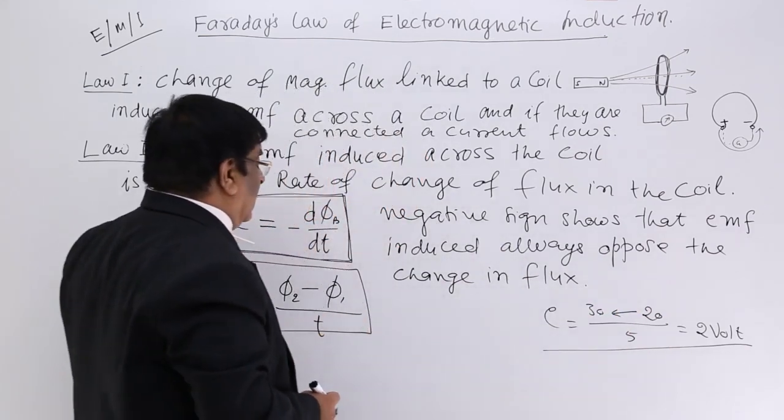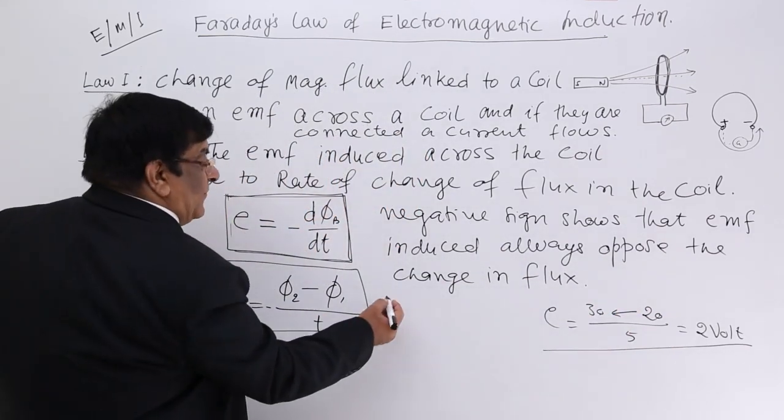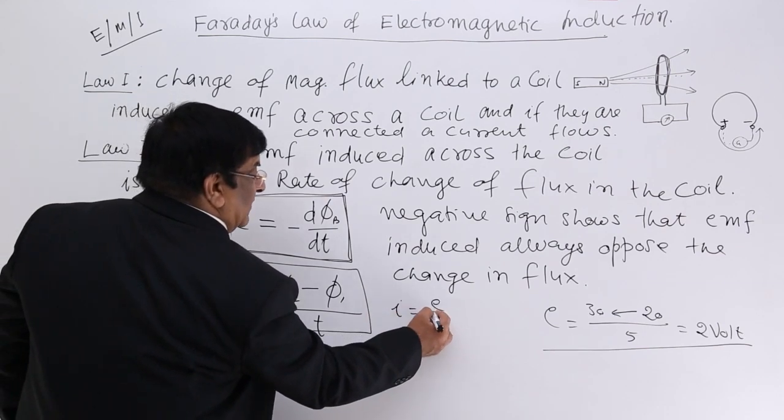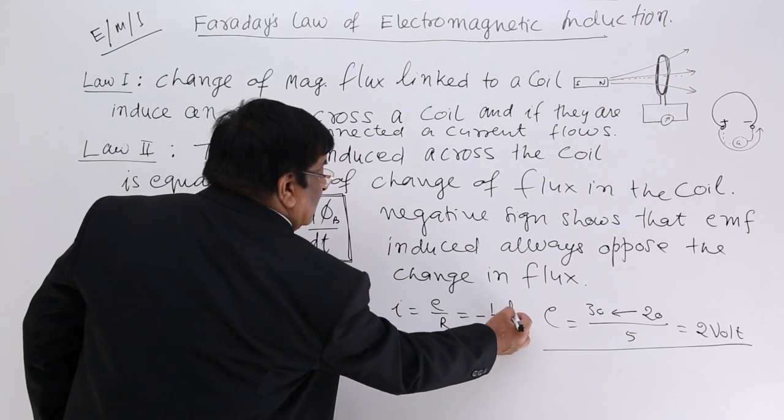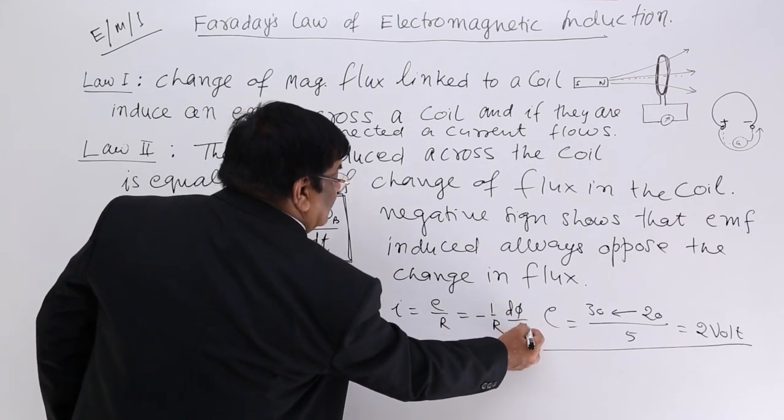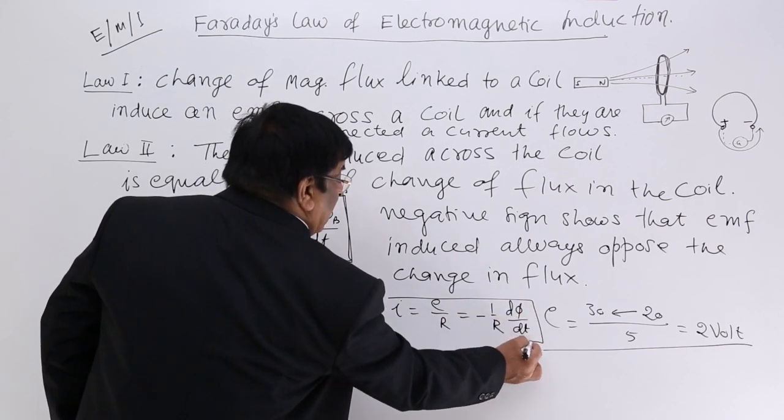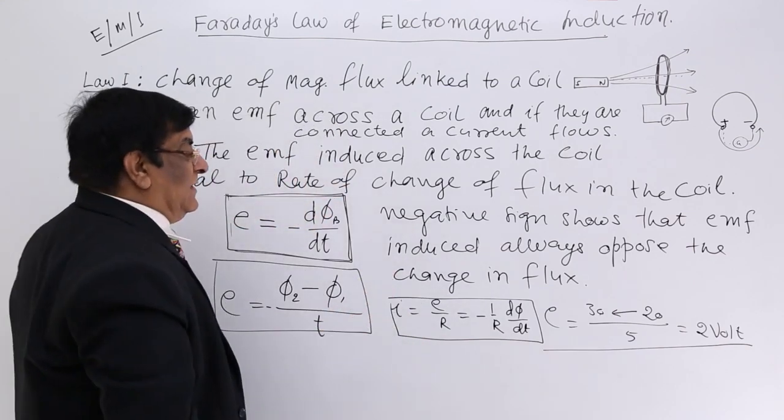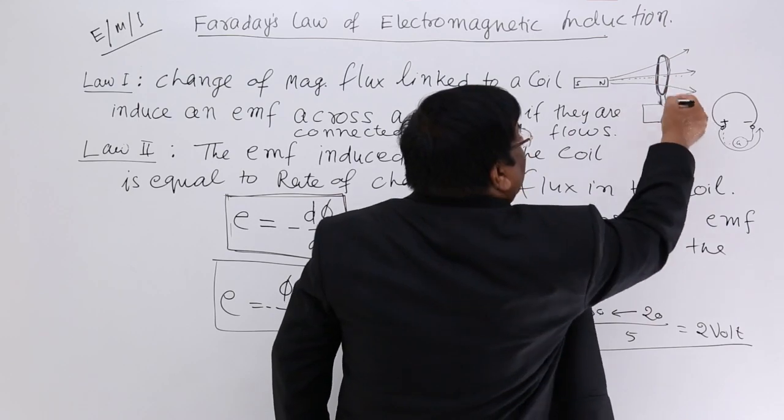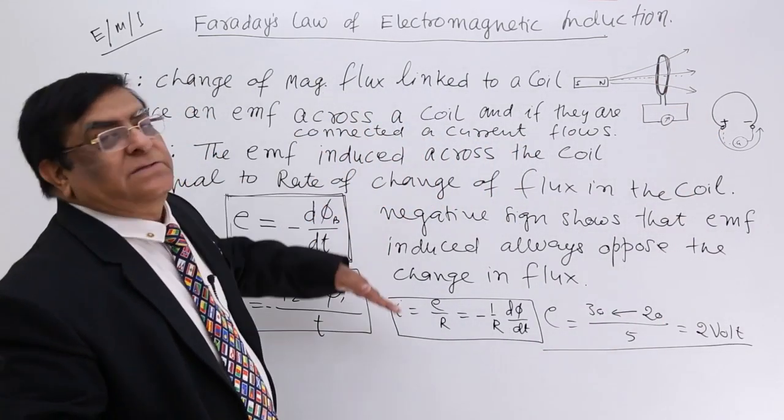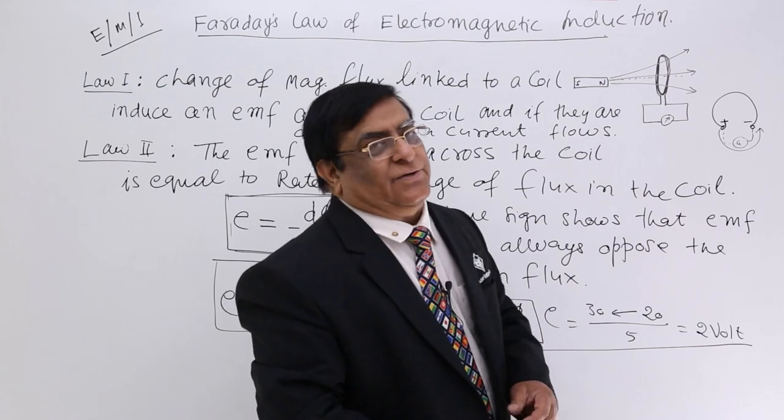How much will be the current flowing? Current flowing I is always equal to E upon R. So, this we can say is -1/R × dφ/dt. This is for the current flowing in the circuit. And what is this R? This R is resistance of this device which is connected with the coil. This is Faraday's law's introduction.